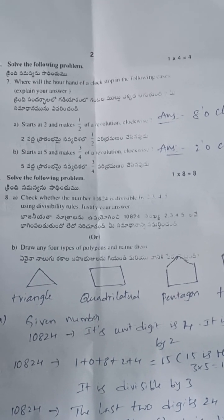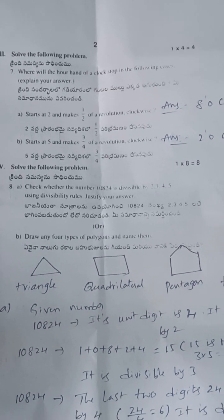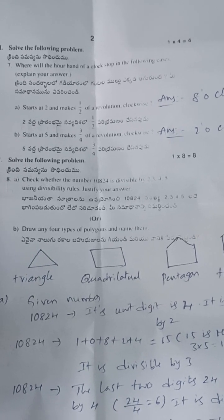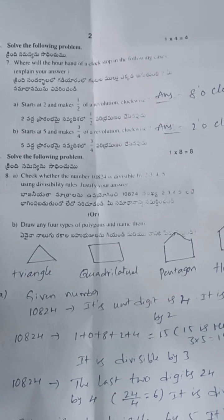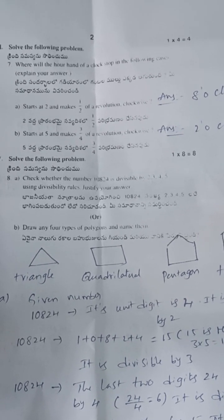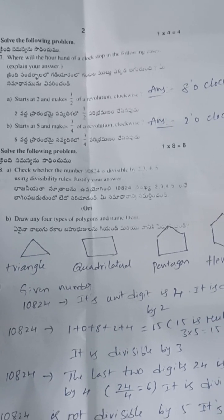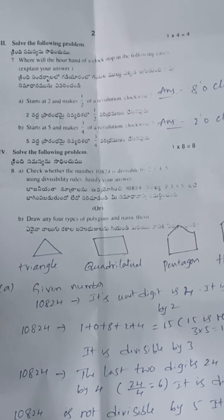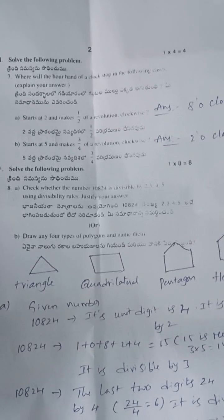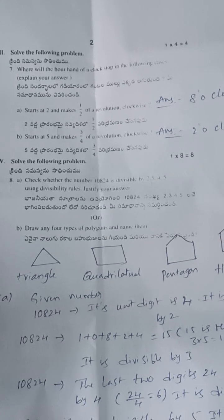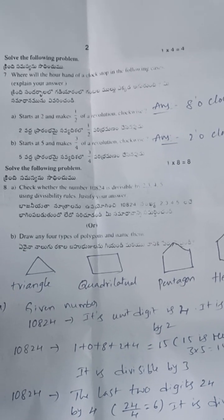Where will the hour hand of a clock stop in the following cases? Case one: start at 2 and make one-half of a revolution clockwise. Half a revolution is 6 hours. So 2 hours plus 6 hours equals 8 o'clock.